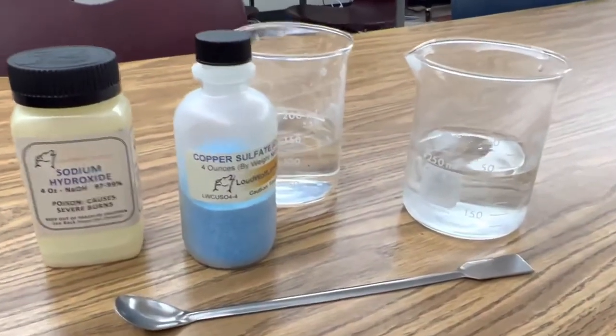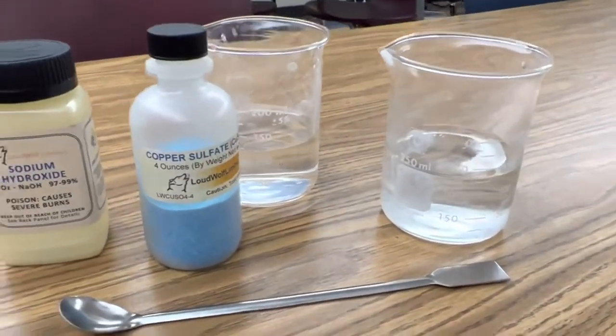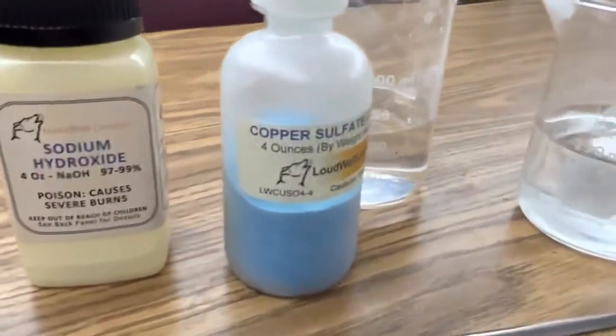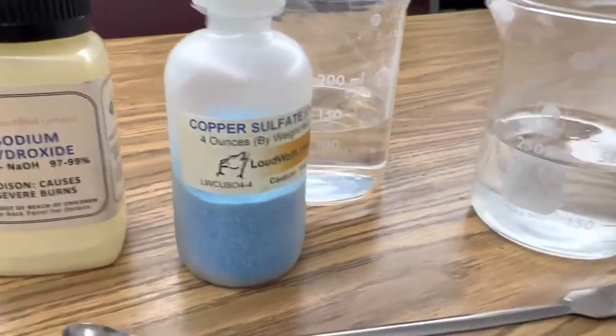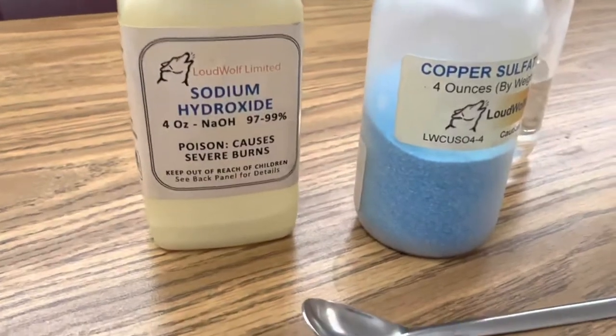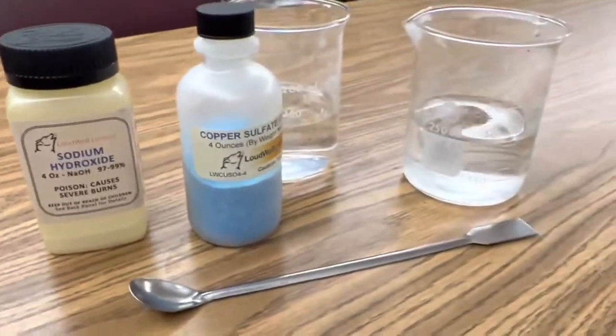So all you need for this reaction are a couple of beakers filled with 125 milliliters of distilled water, about five grams of copper sulfate in one solution, and about five grams of sodium hydroxide in the other solution.